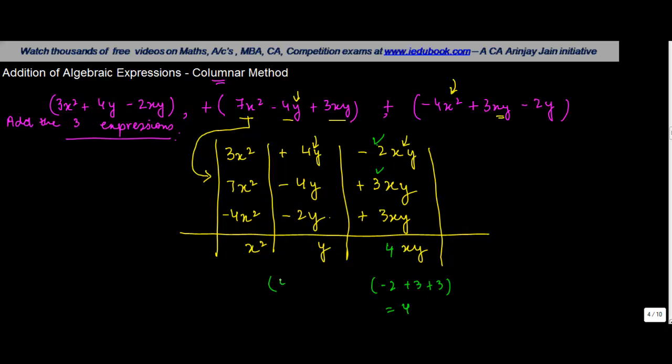In this case, you have 4, first one, then minus 4 minus 2. So 4 minus 4 is 0, minus 2 is minus 2. Similarly, here, take the sum of the coefficients, 3 plus 7 minus 4, 10 minus 4, 6.